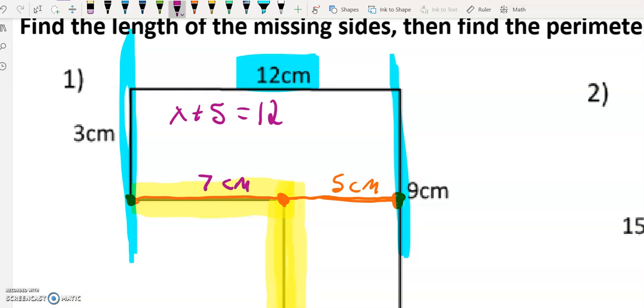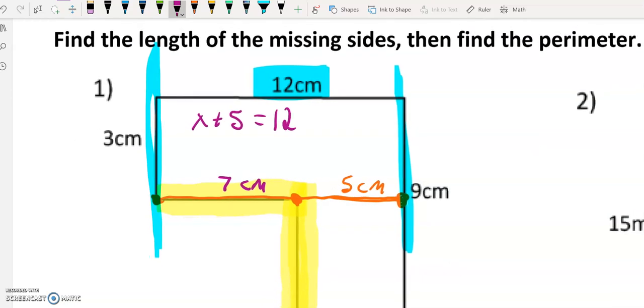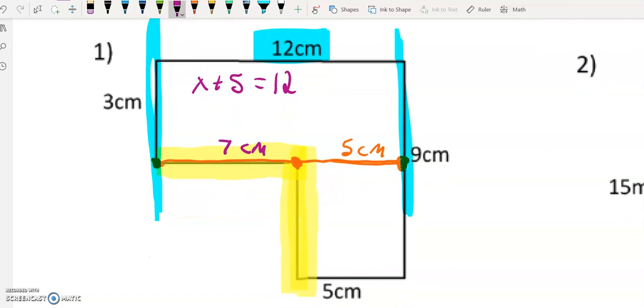Because in order for this whole length to be 12, 7 plus 5 would give me that 12 measurement. And again, that's just using our context clues. Knowing that from this side all the way across will be 12. We know that this little piece will be 5. What's the missing piece? 7.